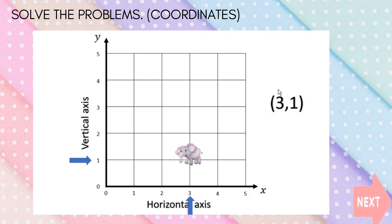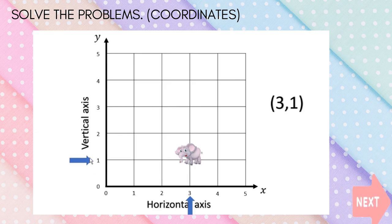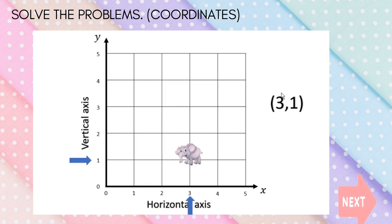Always remember: if you want to write the coordinates of something, you must first write the horizontal axis — that is the X axis — and then write the Y axis. For example, the answer is (3, 1), so we write 3 first, then 1. We cannot write (1, 3) — that is wrong.